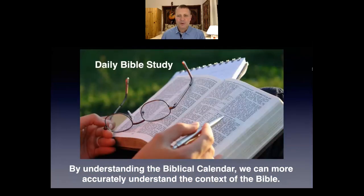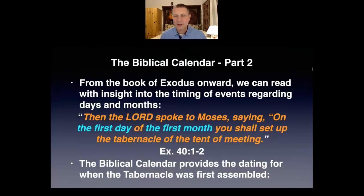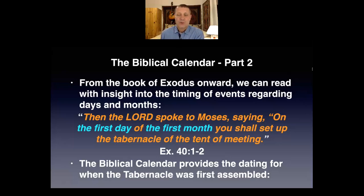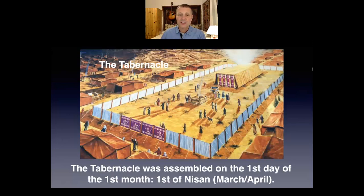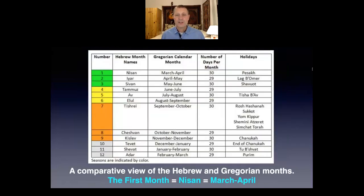Number one: by understanding the biblical calendar, we can more accurately understand the context of the Bible. This is very practical for daily Bible study. As we open the books of the Bible, we can understand what is being written. For example, in Exodus chapter 40, we read: 'Then the Lord spoke to Moses saying, On the first day of the first month, you shall set up the tabernacle of the tent of meeting.' The biblical calendar provides the dating for when the tabernacle was first assembled — it's not January 1st. It's the first day of the first month on the biblical calendar, meaning what we now call Nisan, which is in March or April.